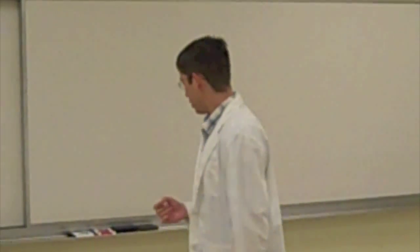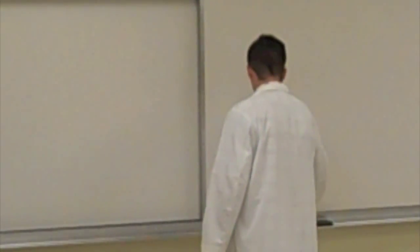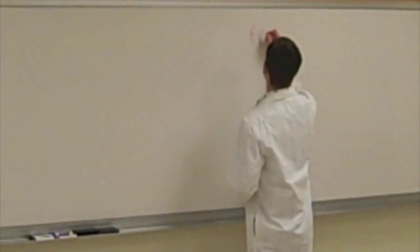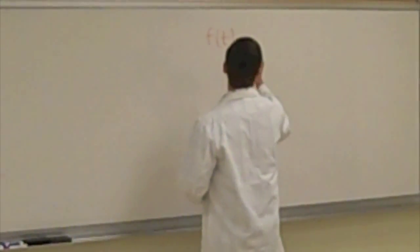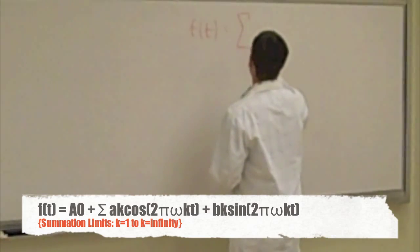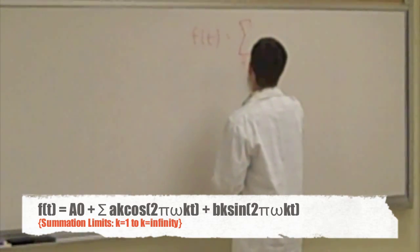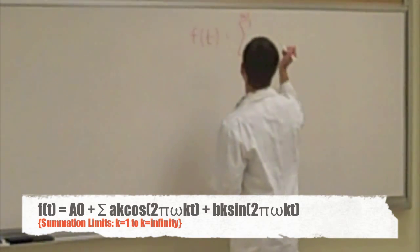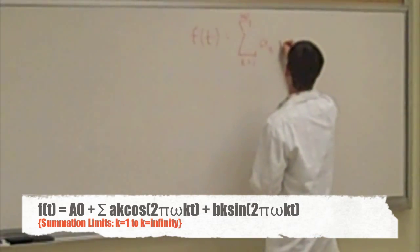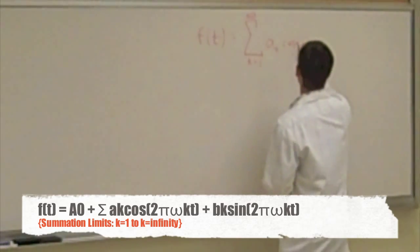Mathematically, this is how we would express this. We would say that our function, f of t, can be written as the sum from k equals 1 to infinity of some constant, a sub k cos 2 pi omega sub k t plus b sub k sin 2 pi omega sub k t.